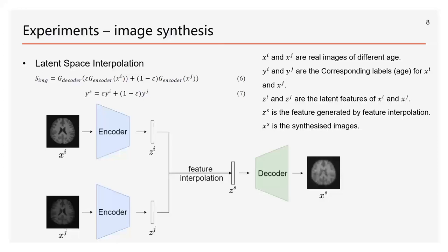To synthesize images, we use a feature interpolation-based method. Equation 6 and the corresponding figure show the synthesis process. First, we pass two images, xi and xj, to the encoder of the generator to extract the latent features zi and zj. We then interpolate zi and zj using a random weight epsilon to get a new latent feature. This new feature is sent to the decoder to get the synthesized image xs. The corresponding label ys is obtained following equation 7. After combining real and synthesized images, we ensure at least 50 images per age group, resulting in a total of 940 images for training.